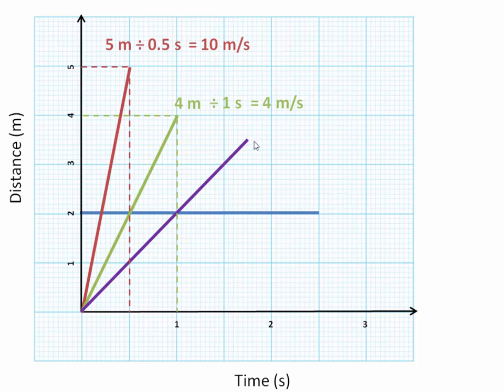Then we've got the journey that's represented by the purple line. So the distance travelled is 3.5 metres, and the time that it took is 1.5 plus another quarter, 1.75 seconds. 3.5 divided by 1.75 is 2 metres per second.